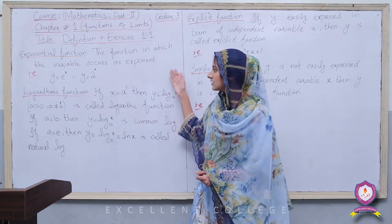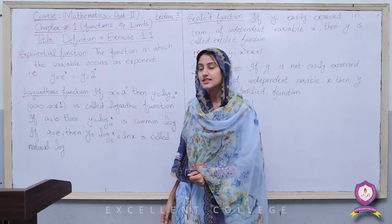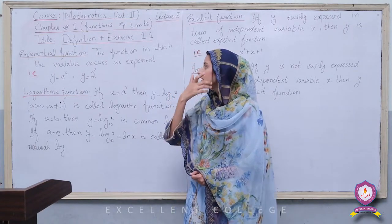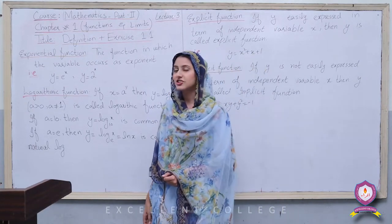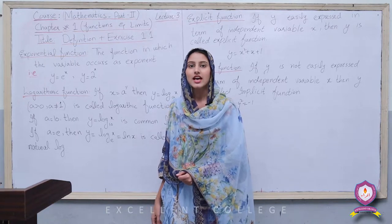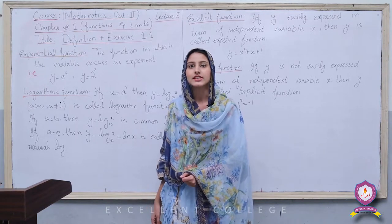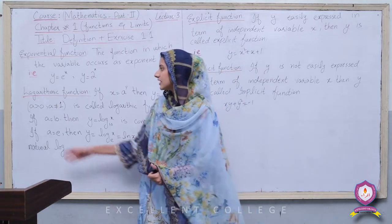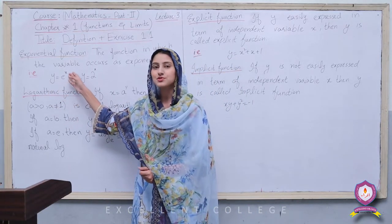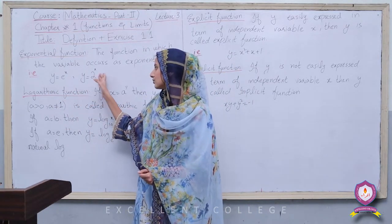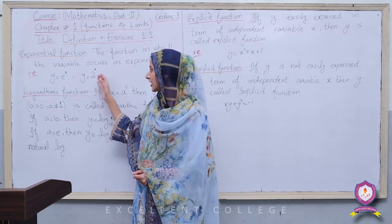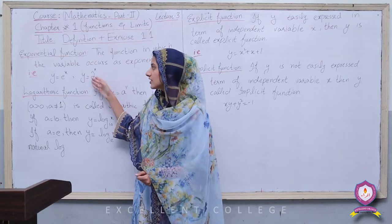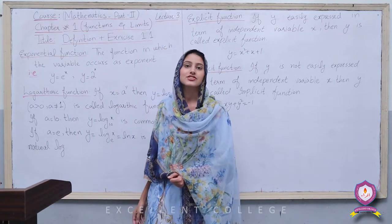The function in which the variable occurs as an exponent is called an Exponential Function. Exponent means power — that is, a function in which our variable is treated as a power or expressed as a power. For example, y = e raised to power x, or y = 2 raised to power x. When our variable comes in the power position, that function is called an Exponential Function.